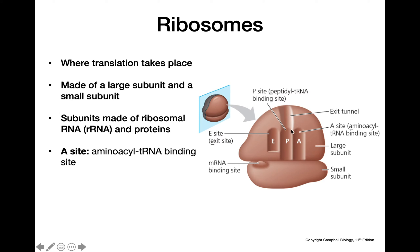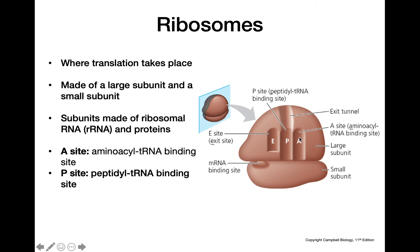First we have the A site, which is the aminoacyl tRNA binding site — this is where the new tRNA comes in and brings the next amino acid in the chain. From the A site it moves over to the P site, the peptidyl tRNA binding site, which holds the growing polypeptide chain. While the tRNA is in the A site, a reaction takes place attaching the amino acid to the growing polypeptide chain, and then the ribosome shifts down so the tRNA that was in the A site is now in the P site with the growing polypeptide chain attached.